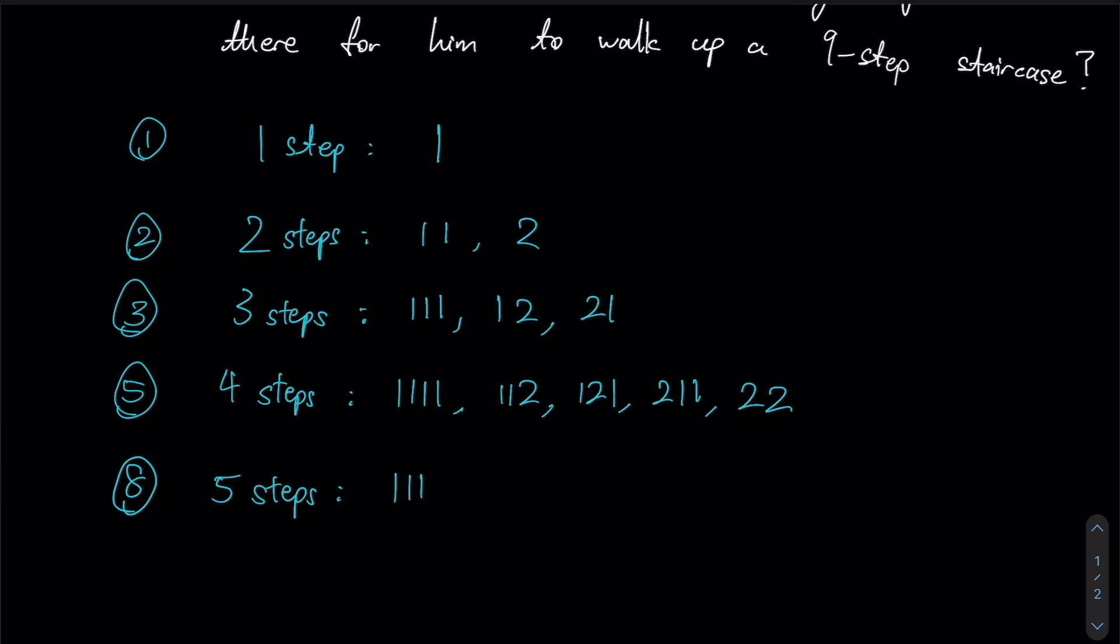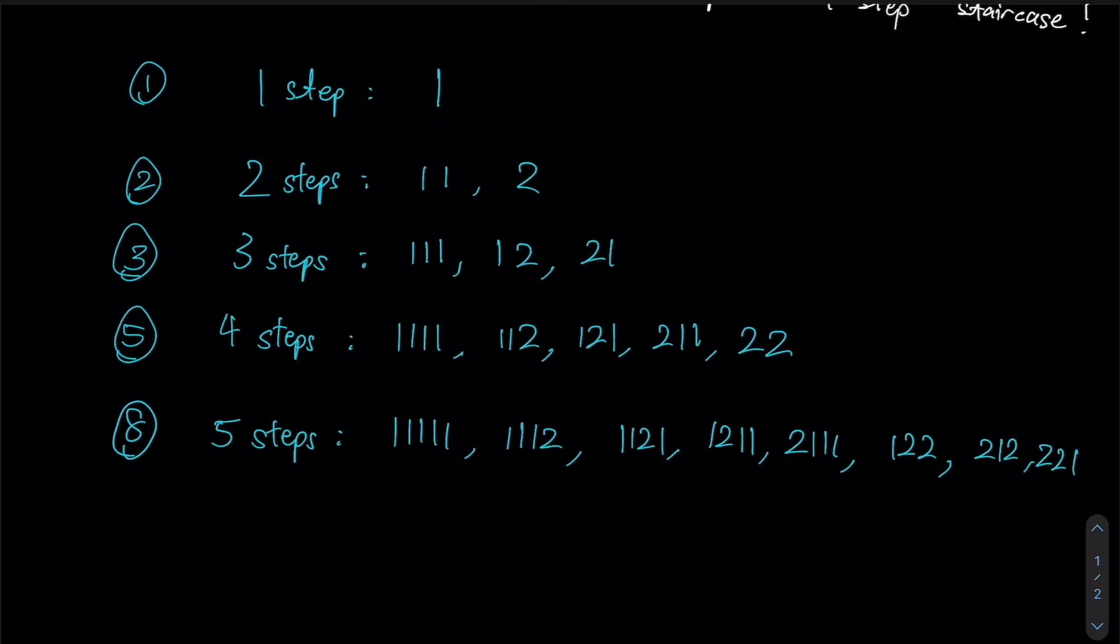Now for five steps, we could have five times of one, one, one, one, two, and then we can just move the two around such that we get all these combinations over here, and then we could have two copies of two. And then we can consider moving the one around. And therefore this will constitute all the possible combinations for five steps. And if you count them, one, two, three, four, five, six, seven, eight, yes, we do arrive at the fact that we have eight total ways for five steps.